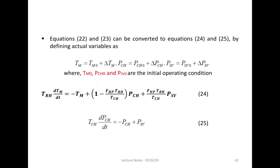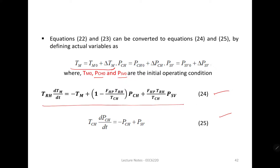Equations 22 and 23 can be converted to equations 24 and 25 by defining actual variables, where TM equals TM0 plus delta TM. Here TM0, PCH0, and PSV0 are the initial operating conditions. The resulting output equations are similar in form to equations 22 and 23.